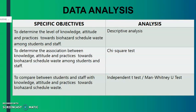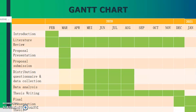For data analysis, according to each specific objective using SPSS: for the first specific objective I use descriptive analysis; to determine the association between knowledge, attitude, and practices I use chi-square test; to compare between students with knowledge, attitude, and practices I use independent t-test or Mann-Whitney test. The research has been ongoing since February 2020, with literature review and thesis writing throughout the year. Questionnaire distribution runs from May to August 2020 during semester break, as this is the right time when everyone is free after examination with no stress or pressure influencing responses.